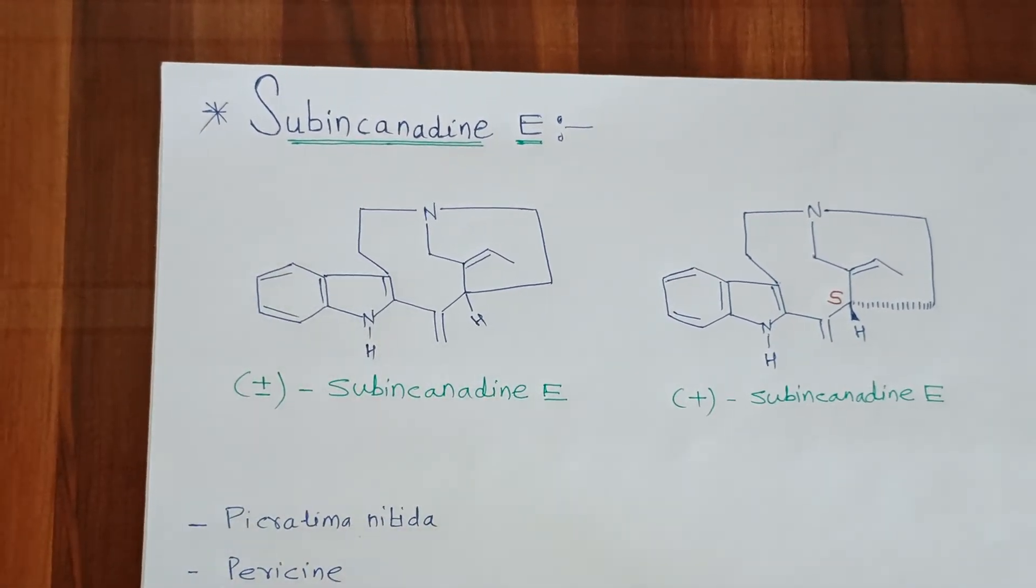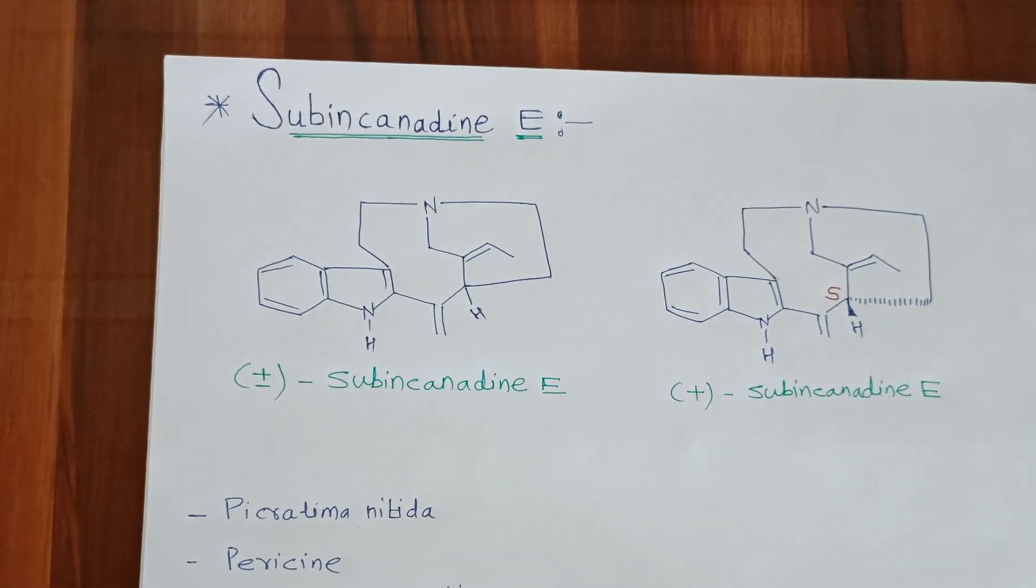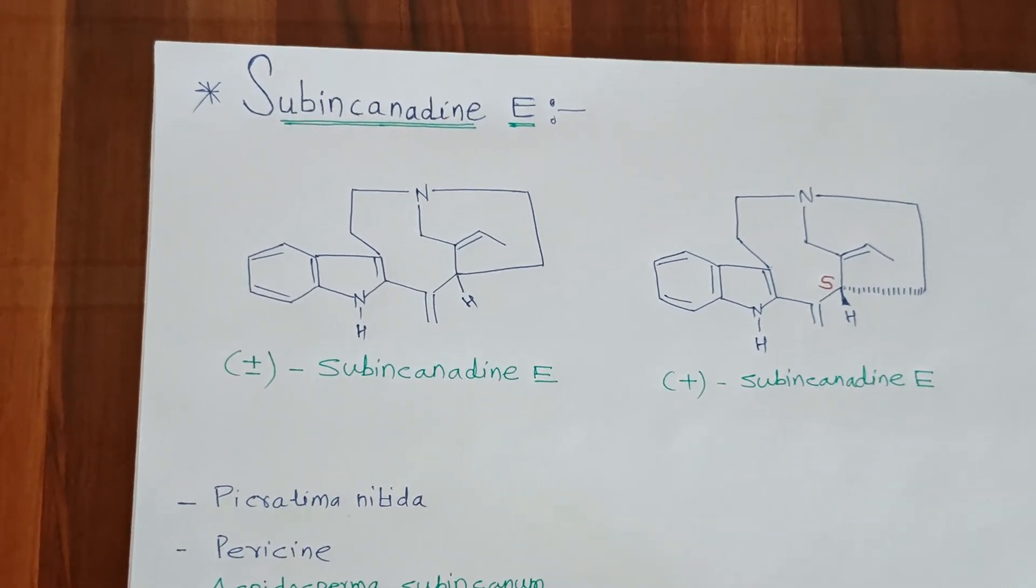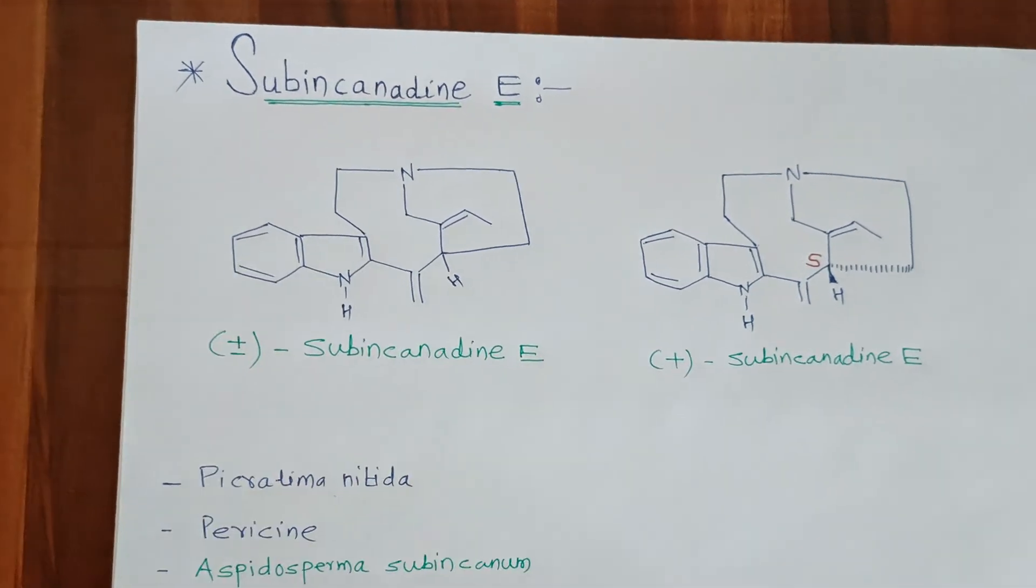Subincanadine E and other derivatives are biologically important cytotoxic alkaloids and were isolated from bark of the Brazilian medicinal plant Aspidosperma subincanum.